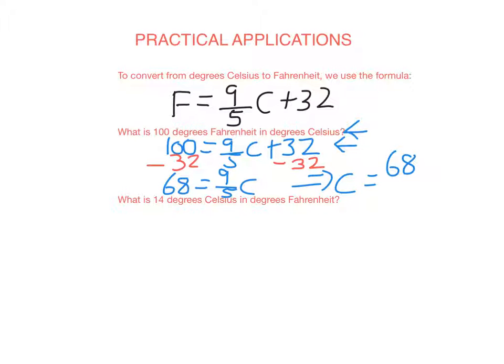So c is just 68 divided by 9 over 5, or if you like, 68 times 5 over 9. Now if you put that in your calculator, you get 37.7 recurring, so I'm just going to round it to one decimal place. So that's 37.8 degrees Celsius.